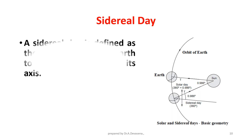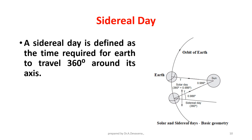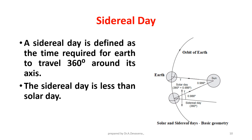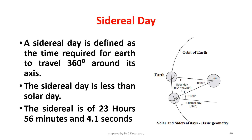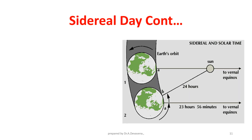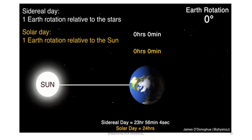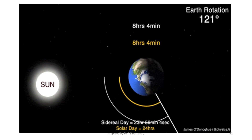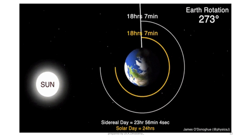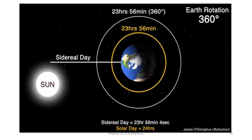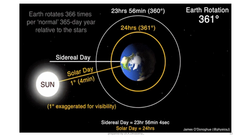Sidereal day. A sidereal day is defined as the time required for the Earth to travel 360 degrees around its axis. The sidereal day is less than a solar day — the sidereal day is 23 hours, 56 minutes, and 4.21 seconds. A geostationary satellite must have an orbital period of one sidereal day in order to appear stationary to an observer on Earth.